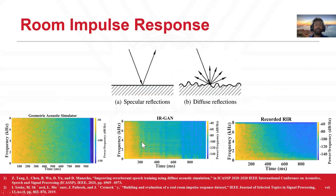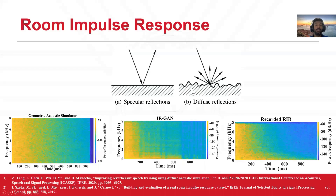Prior room impulse response simulators use room geometry, sound absorption, and sound deflection coefficients as input, and render room impulse responses by simulating occlusion, specular, and diffuse reflection. There is still a gap in the reverberation effect simulated by existing room impulse response simulators and real-world room impulse response.